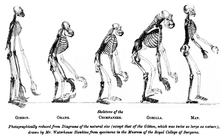"Slow though the process of selection may be, if feeble man can do much by his powers of artificial selection, I can see no limit to the amount of change, to the beauty and infinite complexity of the co-adaptations between all organic beings, one with another and with their physical conditions of life, which may be effected in the long course of time by nature's power of selection. We are profoundly ignorant of the causes producing slight and unimportant variations, and we are immediately made conscious of this by reflecting on the differences in the breeds of our domesticated animals in different countries, more especially in the less civilized countries where there has been but little artificial selection."